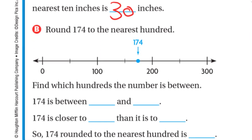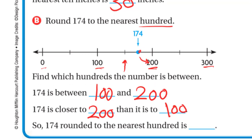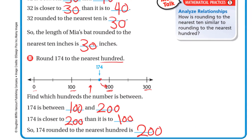Now we want to round 174 to the nearest hundred. On the number line we have 0, 100, 200, 300. So 174 is between 100 and 200. The midpoint is 150, and 174 is after 150, so 174 rounded to the nearest hundred is 200.